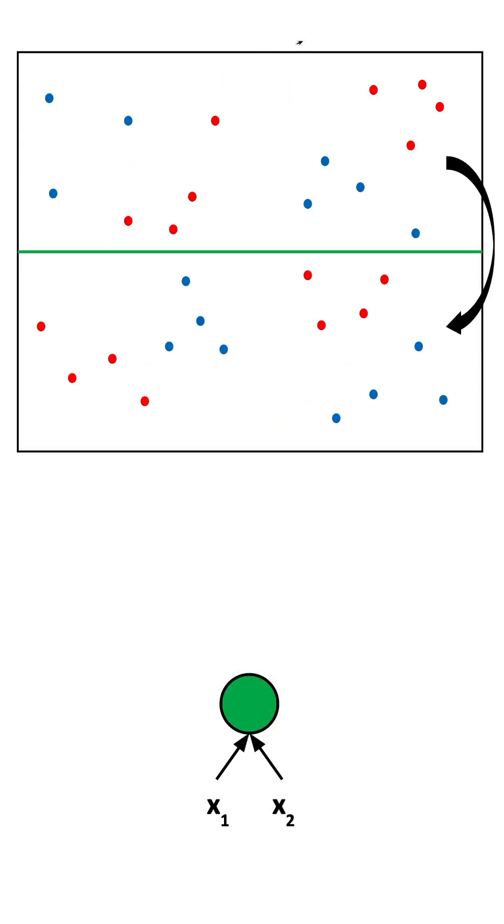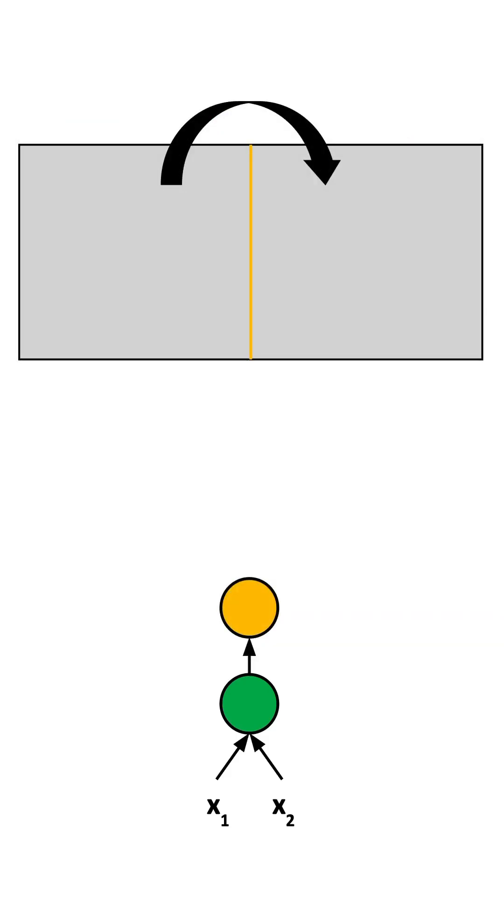Now, if we increase the depth instead, something interesting happens. The first neuron splits our data into two regions, while the second neuron takes this new space and tries to split it again. You can think about this as folding the space before feeding it to the second neuron.